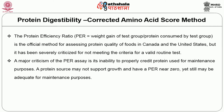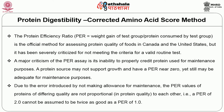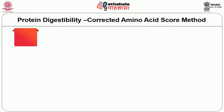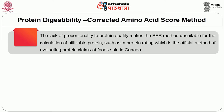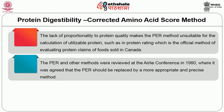A major criticism of the PER assay is its inability to properly credit protein used for maintenance purposes. A protein source may not support growth and have a PER near zero, yet still be adequate for maintenance. Due to the error introduced by not making allowances for maintenance, PER values of proteins of differing quality are not proportional to each other — a PER of 2 cannot be assumed to be twice as good as a PER of 1. This lack of proportionality makes the PER method unsuitable for calculation of utilizable protein. The PER was reviewed and it was agreed it should be replaced by a more appropriate and precise method.